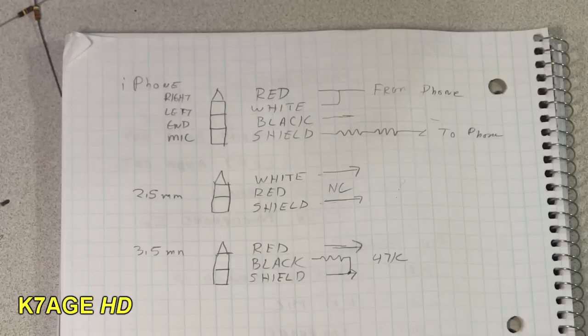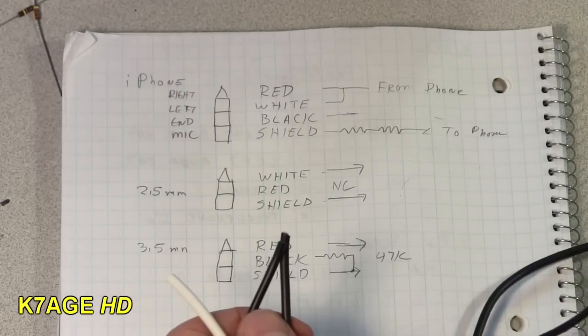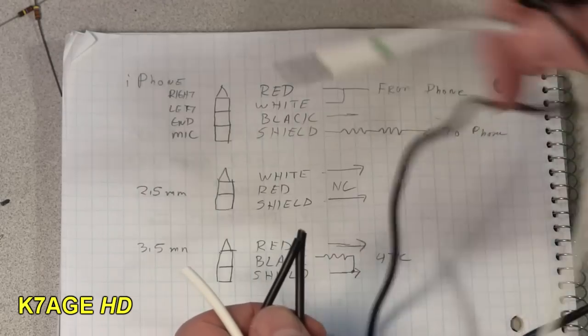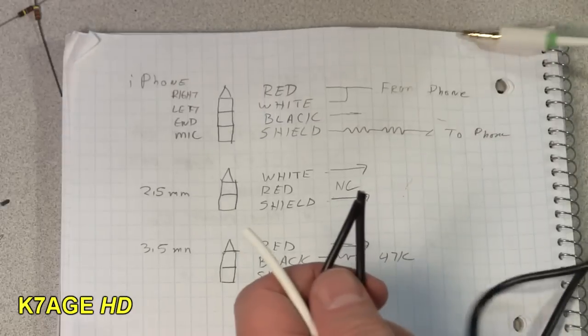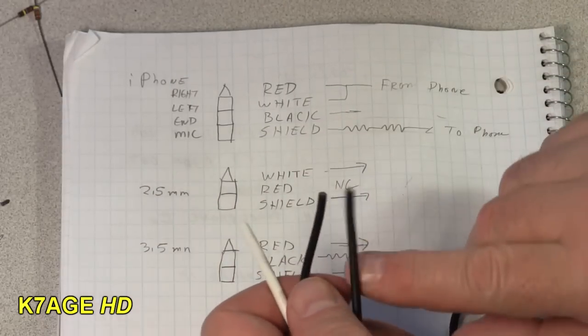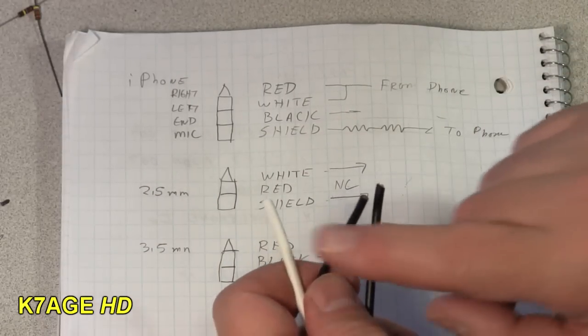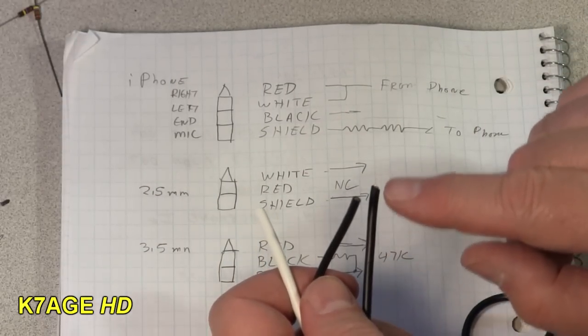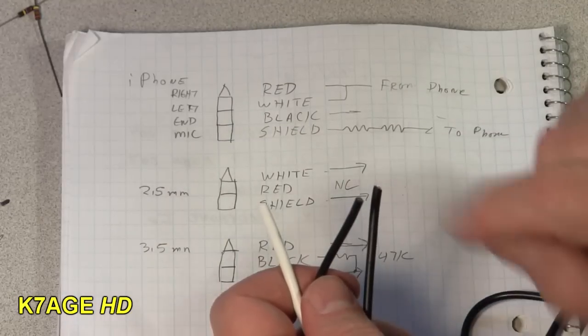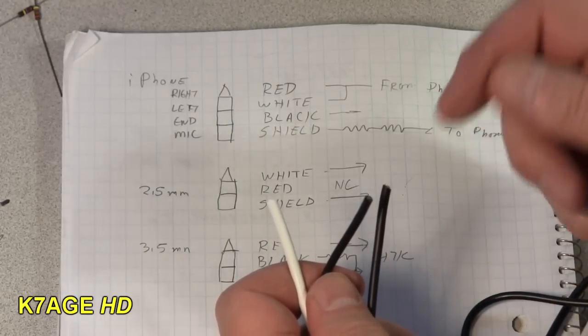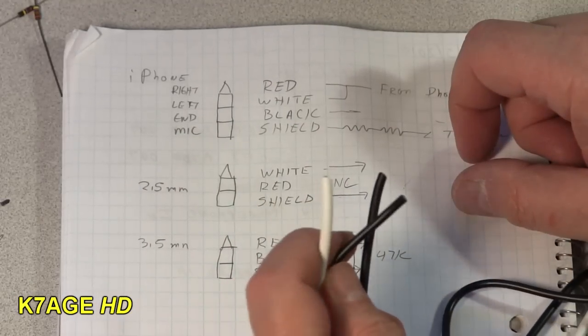The next thing I'm going to do is make up my cable ends. I've got all my cables here that are going to go into the radio and the phone. I'm going to strip off the outer insulation on each of these for about an inch, then strip off the insulation on each one of the wires and pull the shield back.